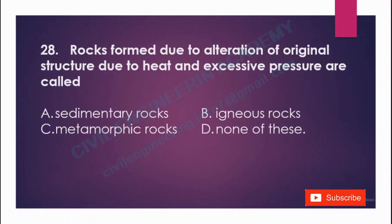Rocks formed due to alteration of original structure due to heat and excessive pressure are called: A) sedimentary rock, B) continuous rock, C) metamorphic rock, D) none of these. The answer is option C, metamorphic rock.